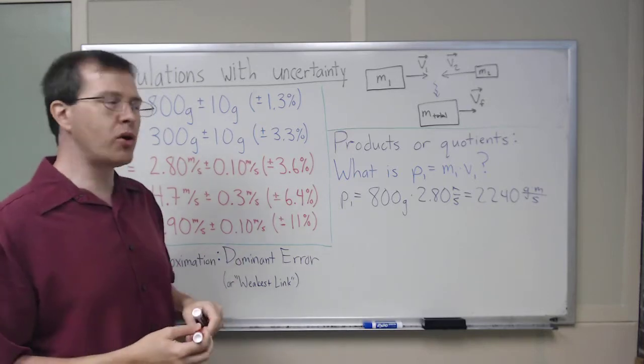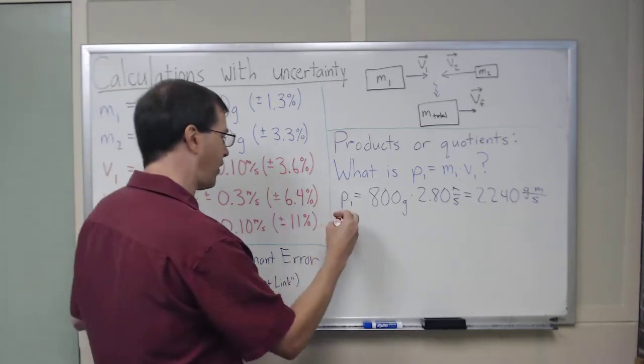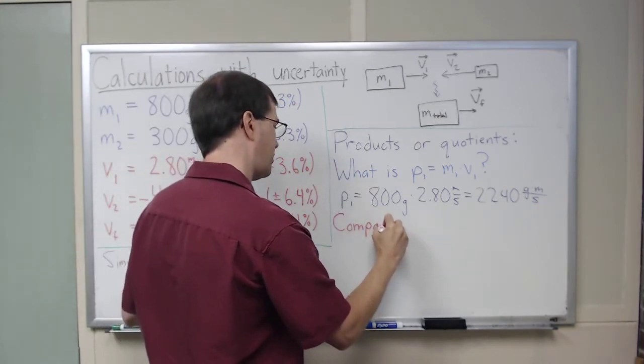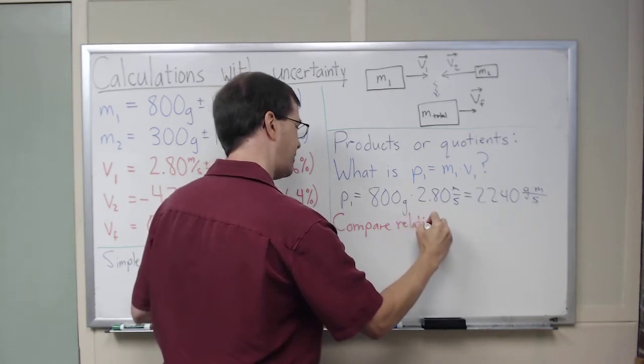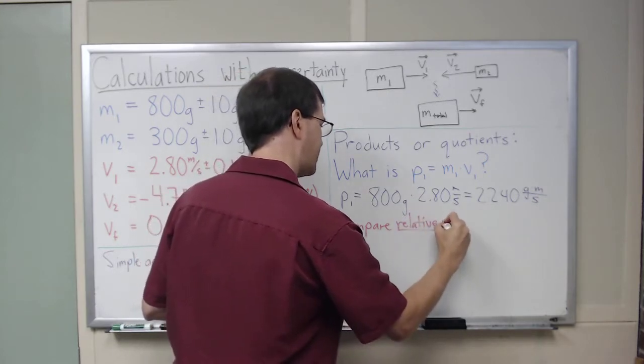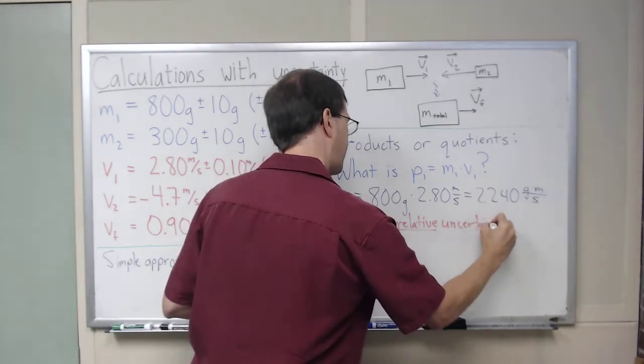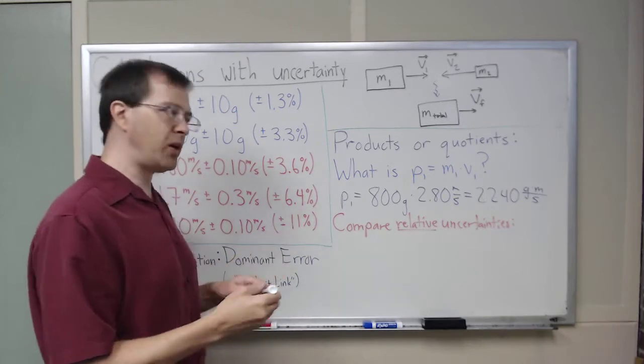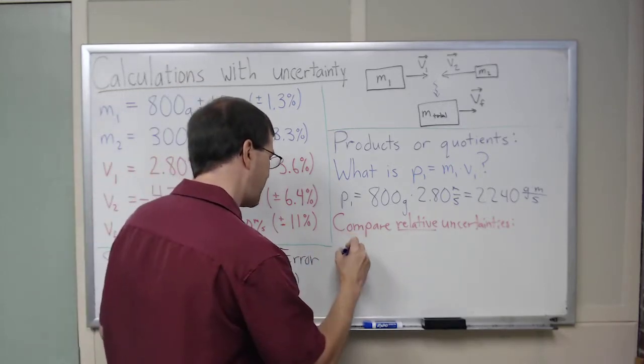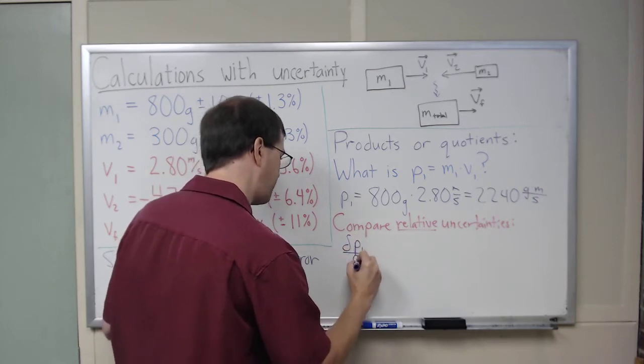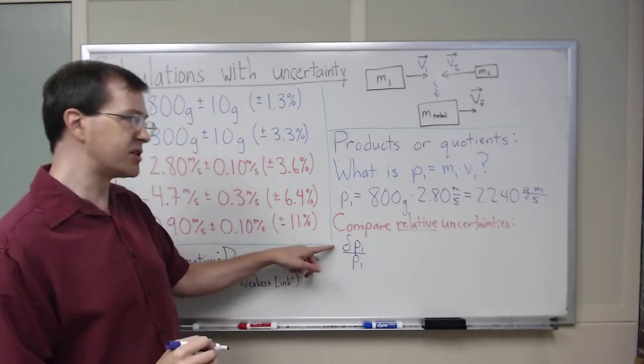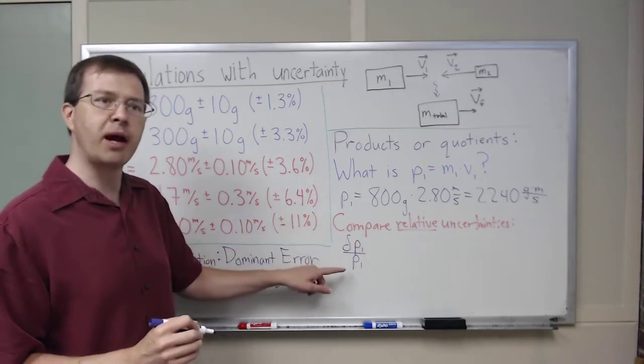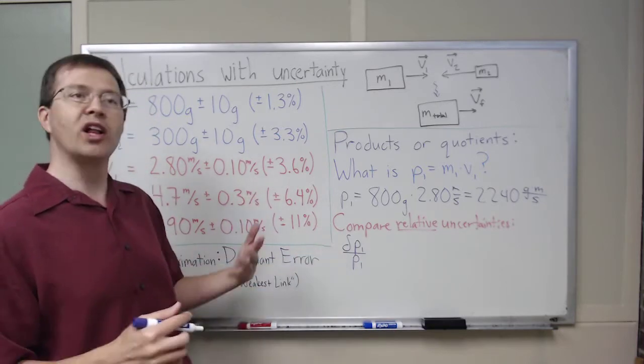The rule for products and quotients is what you compare are the relative uncertainties, the percent uncertainties. In particular, the relative uncertainty in P1, the way we write that, is always just uncertainty in P1 divided by P1. This is how we write relative uncertainty. The delta means uncertainty in, so the absolute uncertainty in P1 is delta P1, and then divide it by P1, just the ratio of the uncertainty to the quantity. That's my relative uncertainty.